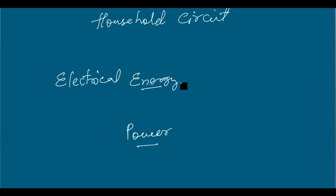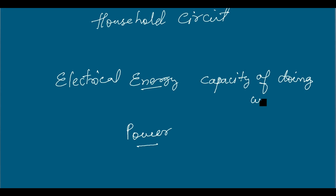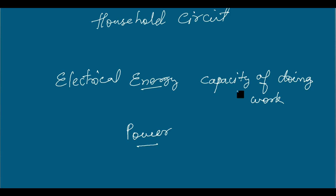I want to distinguish these two things. Energy can be defined in one sentence: the capacity of doing work. There is no single standard definition of energy because energy has different forms — for example, chemical energy, heat energy, electrical energy, light energy, nuclear energy, etc. So this is a very standard definition of energy.